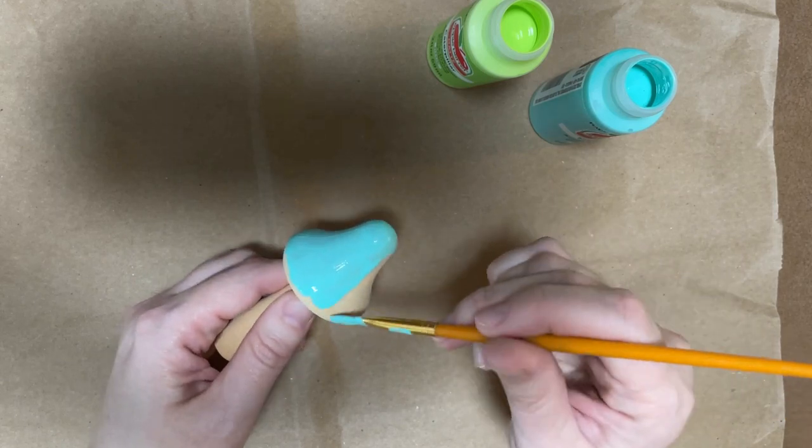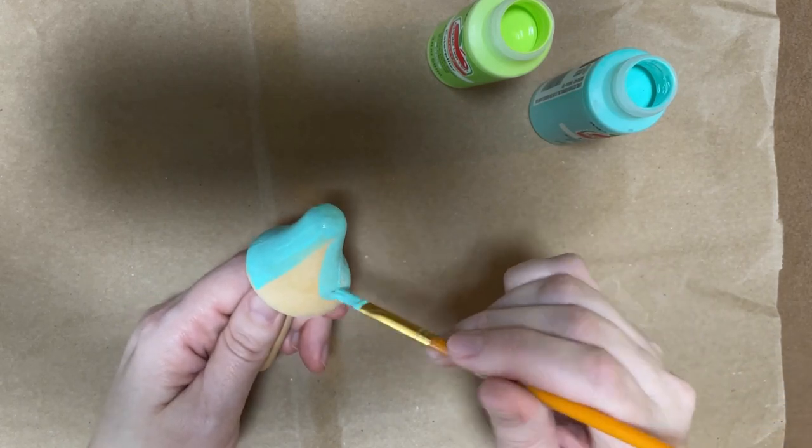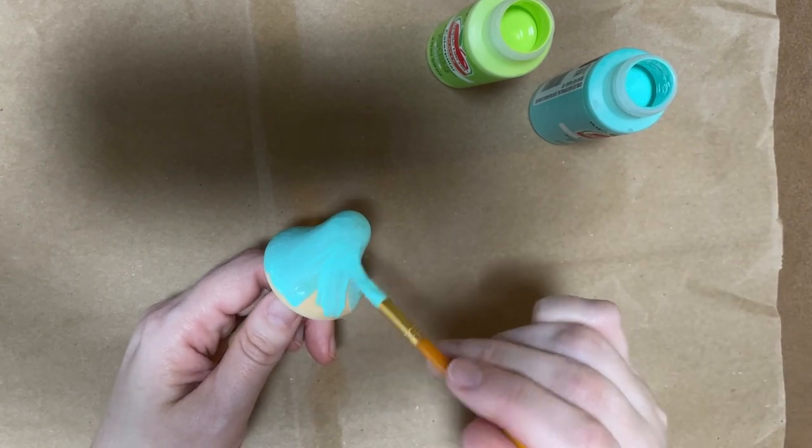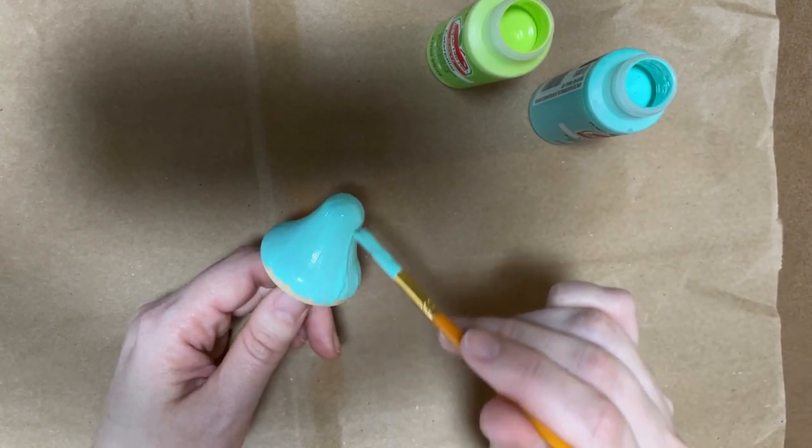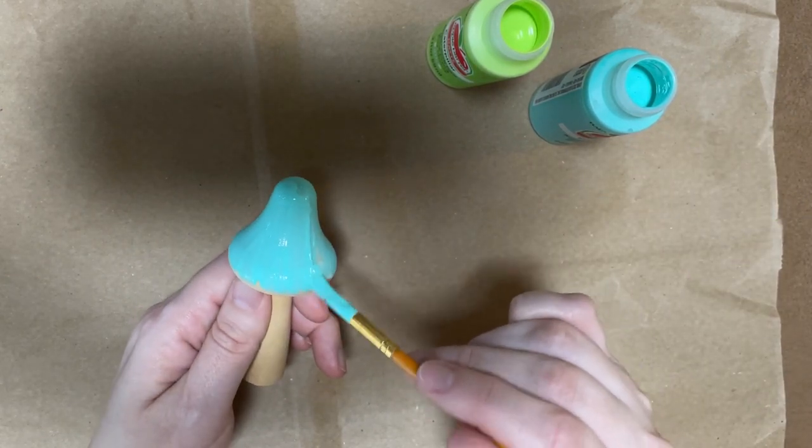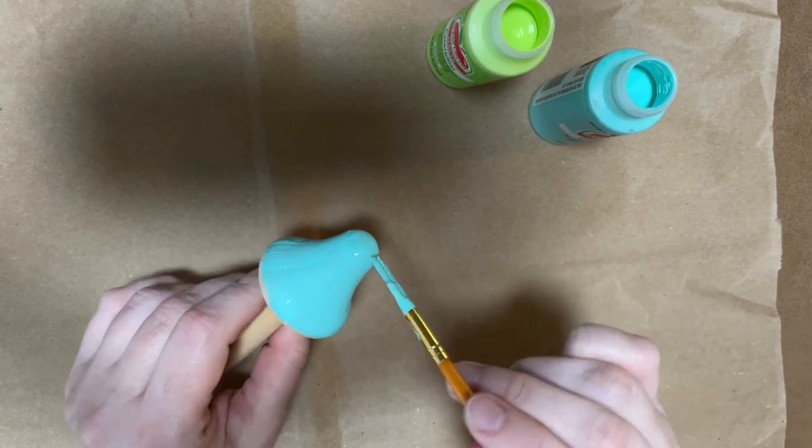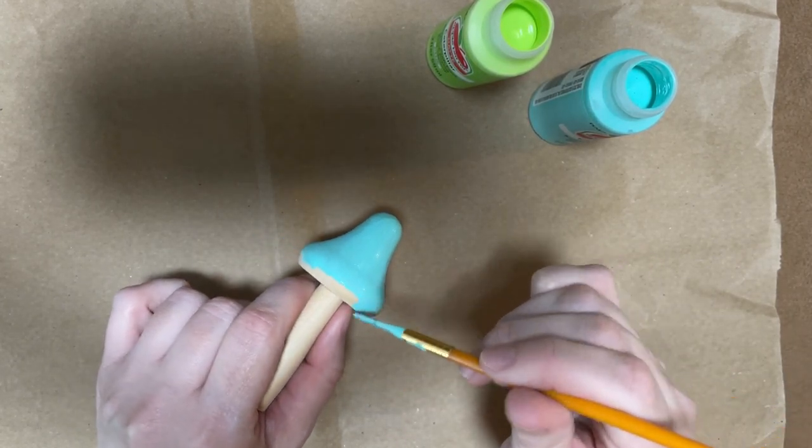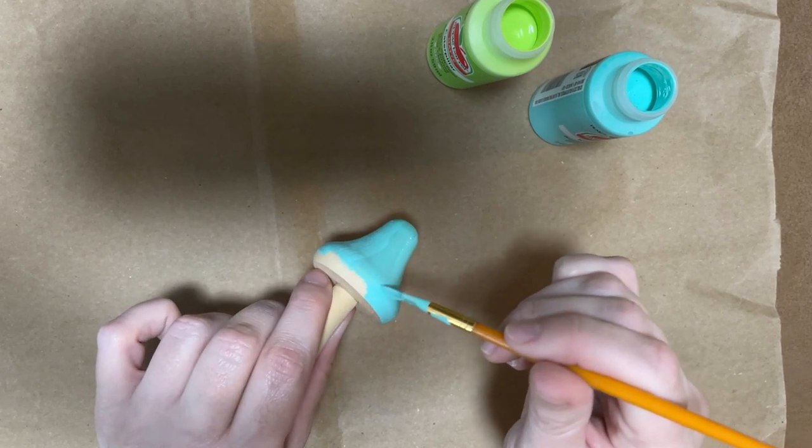I decided I wanted a neon mushroom because it's fun, so I'm just painting the cap of the mushroom a solid color using just regular acrylic paint. I'm not taping anything off or doing anything too exciting here because this is just the first coat.